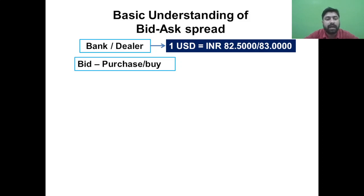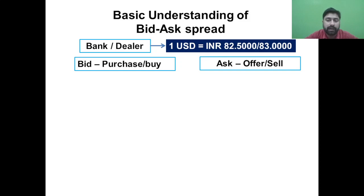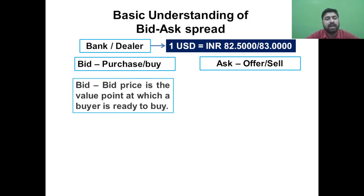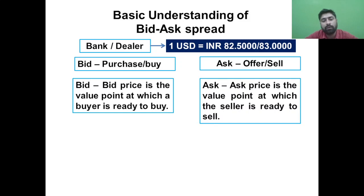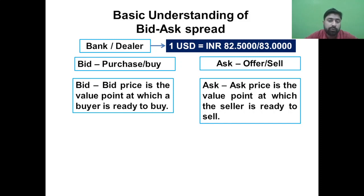First, let's understand what bid and ask mean. Bid means purchase or buy, and ask means offer or sell. The bid price is the value point at which a buyer is ready to buy. The ask price is the opposite — it is the value point at which the seller is ready to sell. For a trade to happen, both buyer and seller must come to a common platform and agree on a particular price, and then they exchange goods and the trade executes.